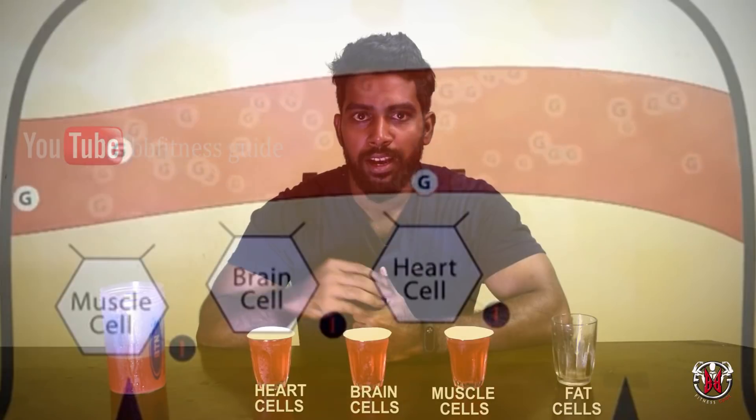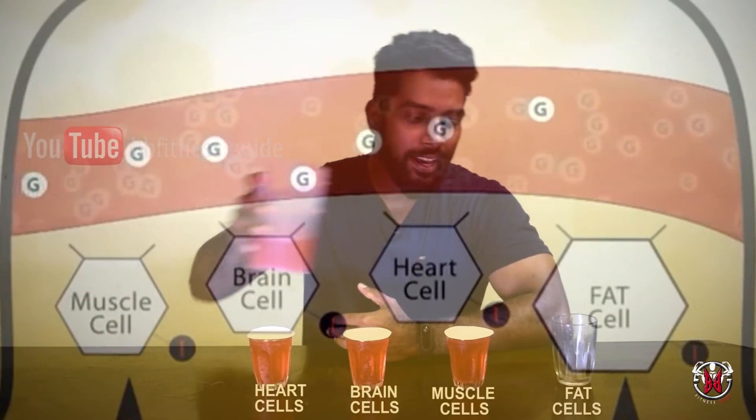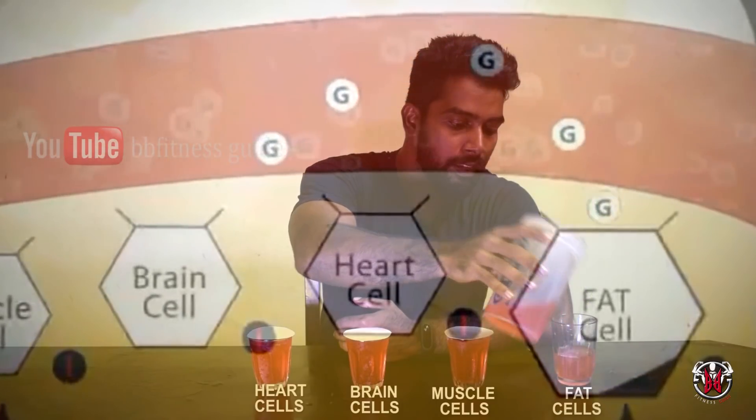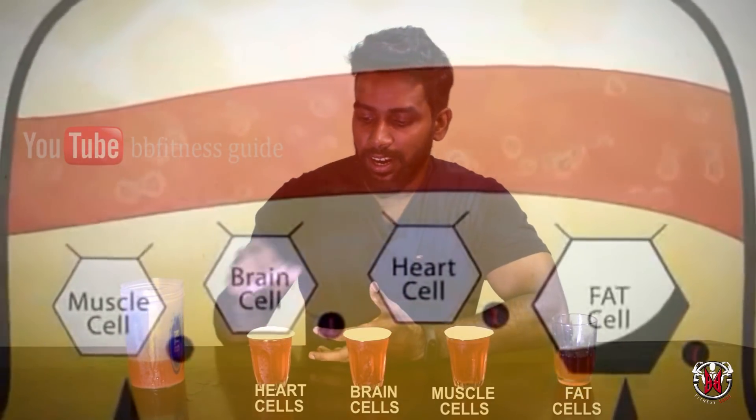When we are at rest, glucose is converted to free fatty acids and stored in fat cells. When we start doing activity, heart cells convert glucose into energy. Then brain cells use glucose for energy. Then muscle cells use glucose — that is when our body starts to get tired.